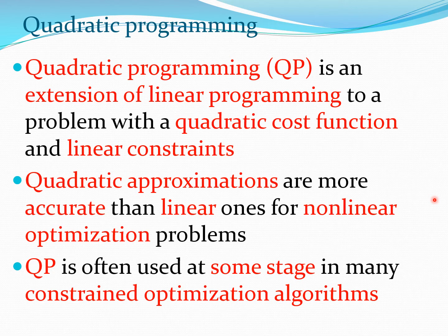For example, we are going to discuss the constraint steepest descent method later and that will use QP as a sub-problem. So essentially you convert your non-linear optimization problem into a QP sub-problem and solve it at different points during the process — at each iteration K where K goes from 0, 1, 2, 3 and so on.